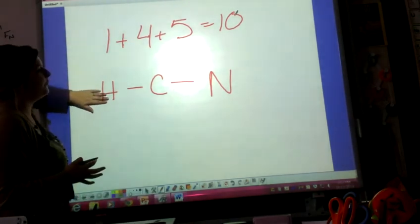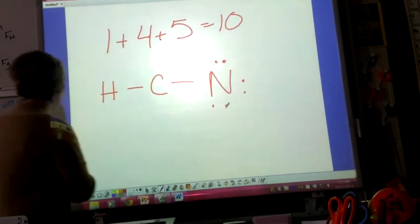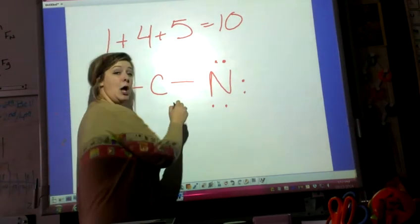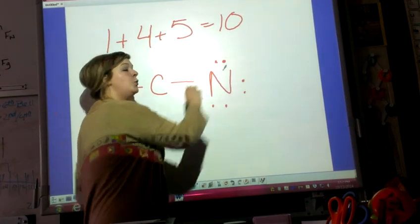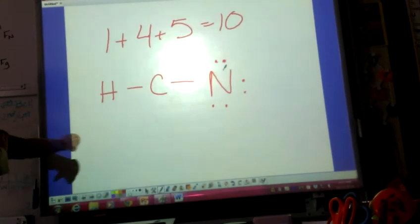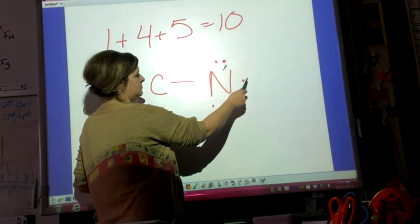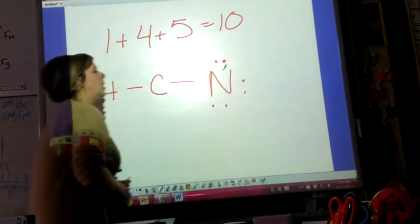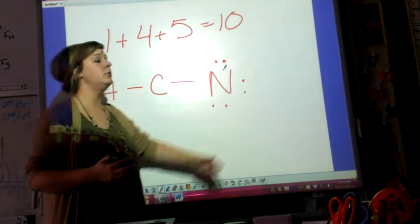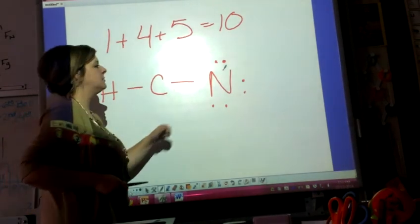Nitrogen is not yet fulfilled, so I add six electrons around nitrogen — one bonding pair and three lone pairs. Checking the count: two, four, six, eight, ten — all ten valence electrons are accounted for. But do all elements fulfill the octet rule? Hydrogen does, nitrogen does, but we need to check carbon.